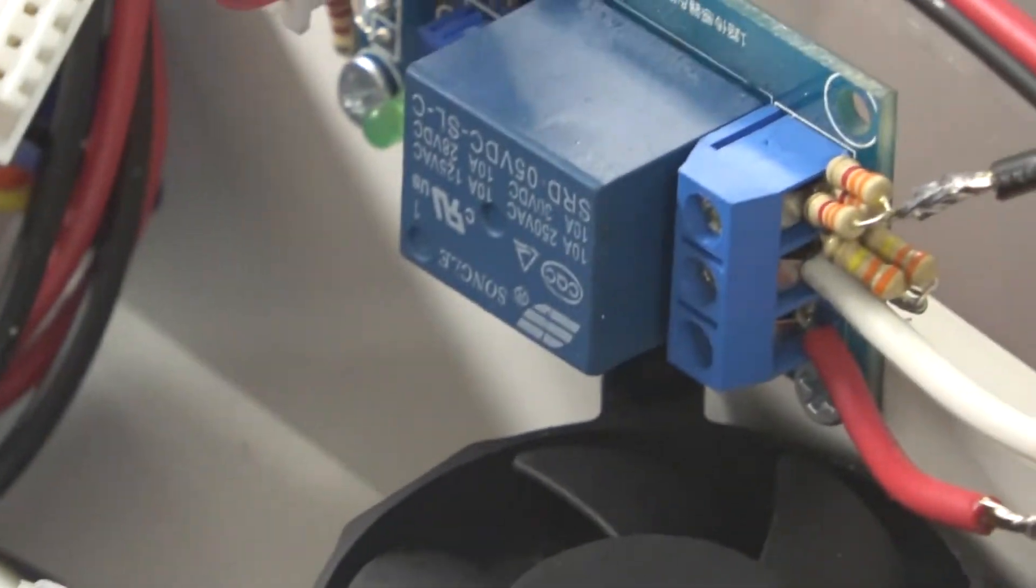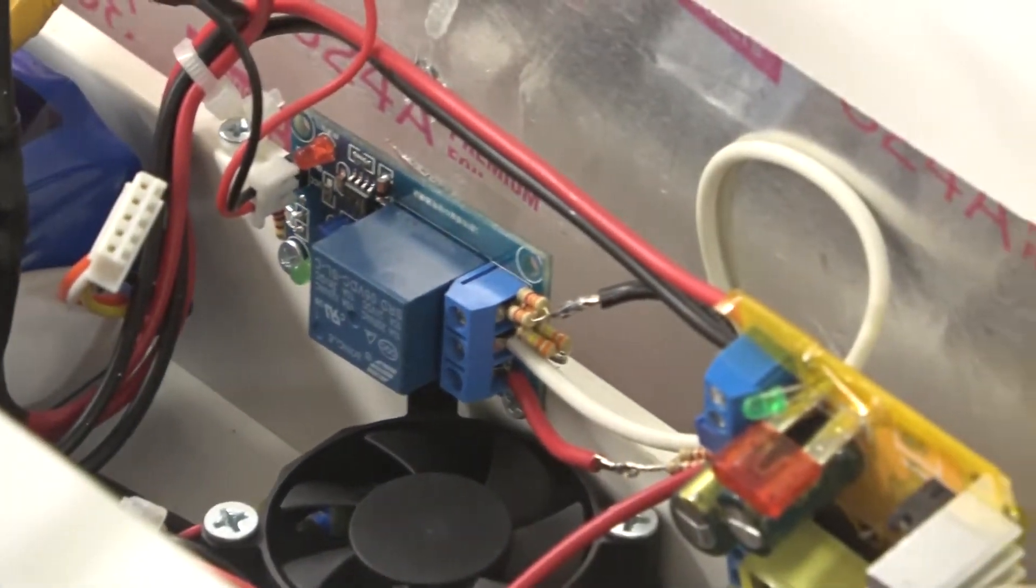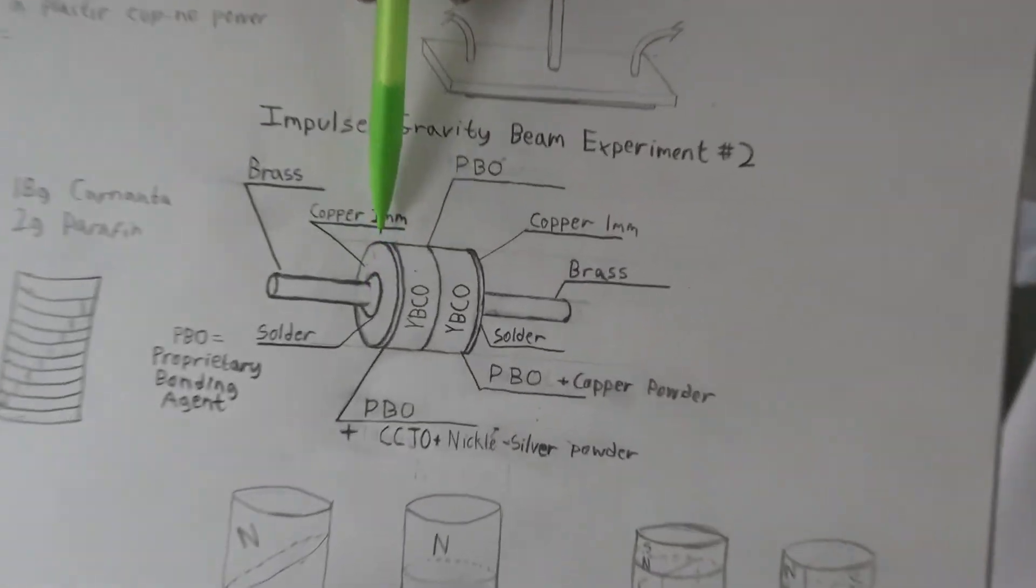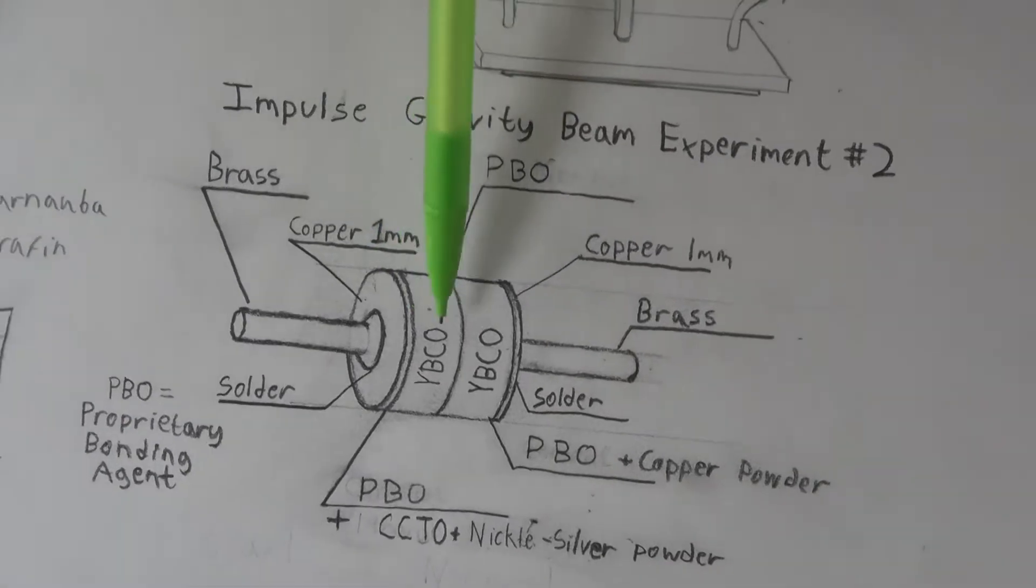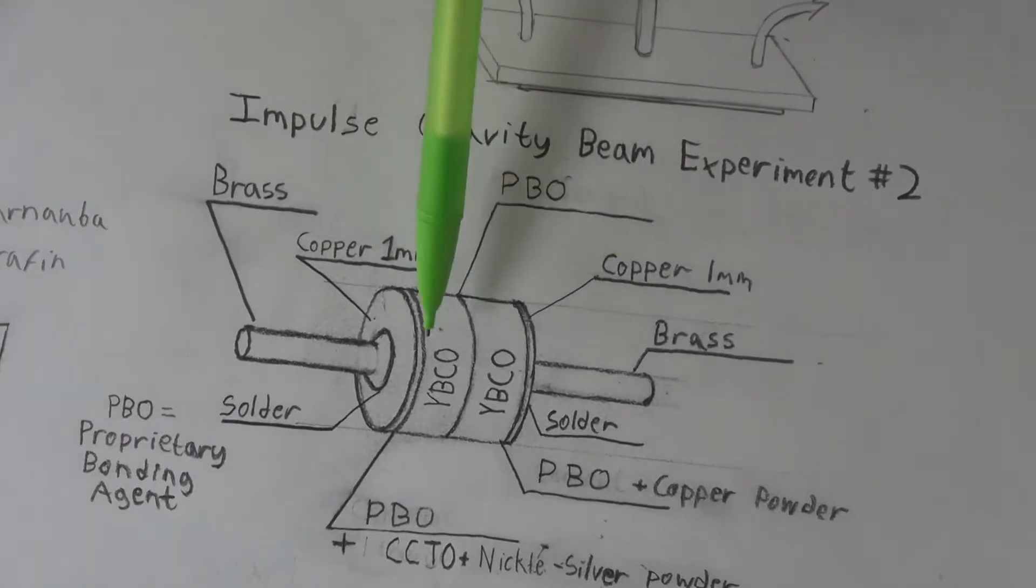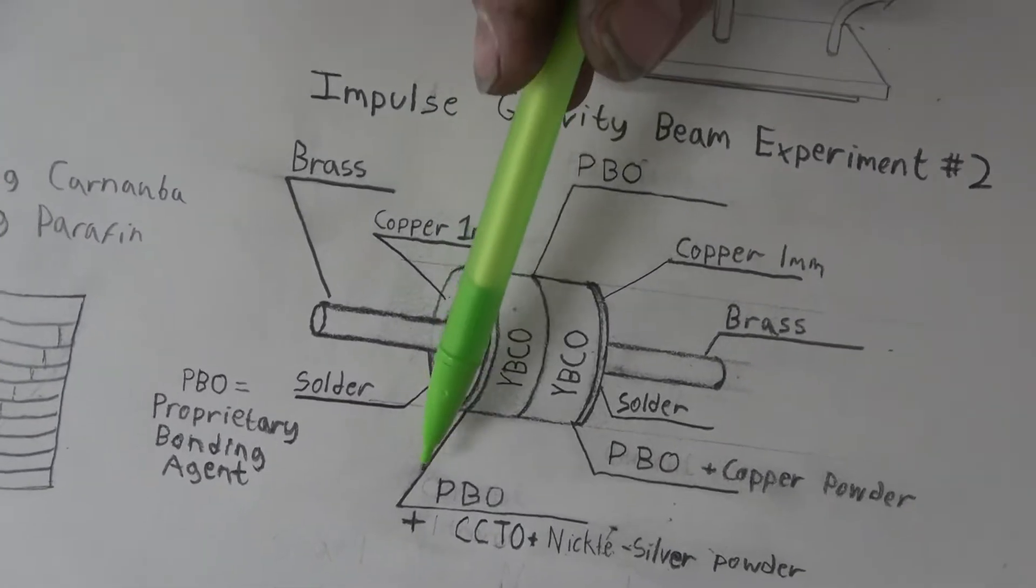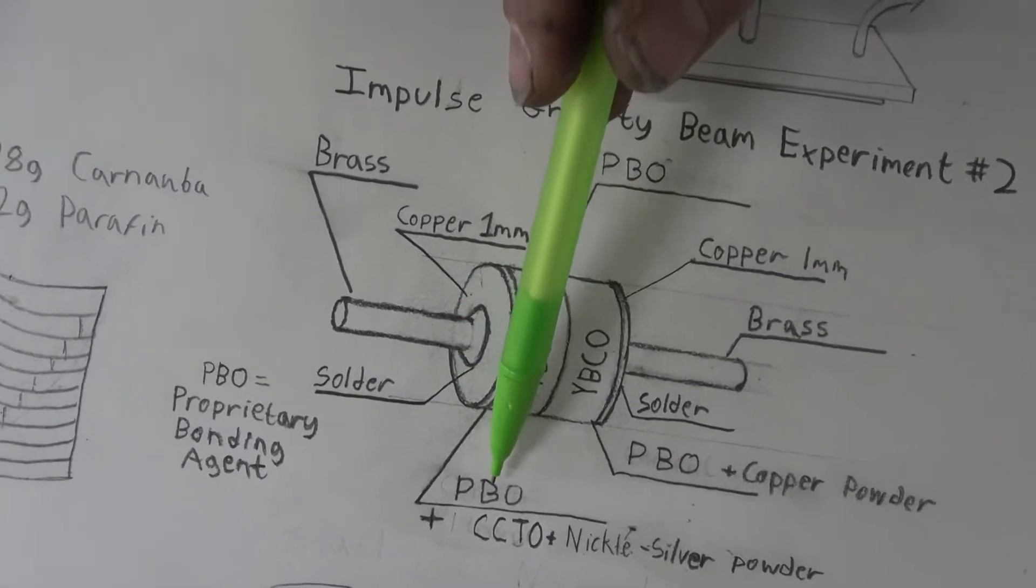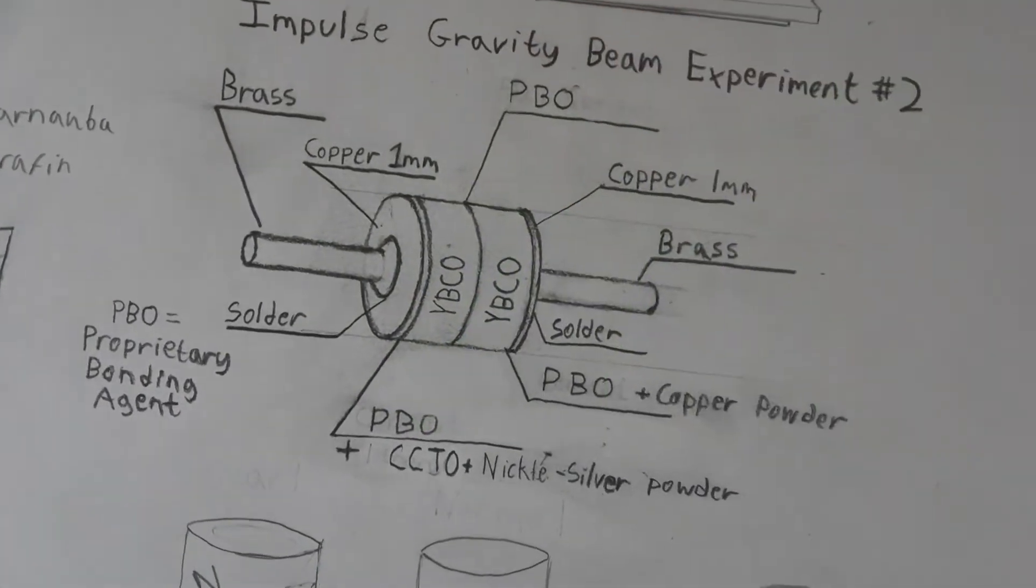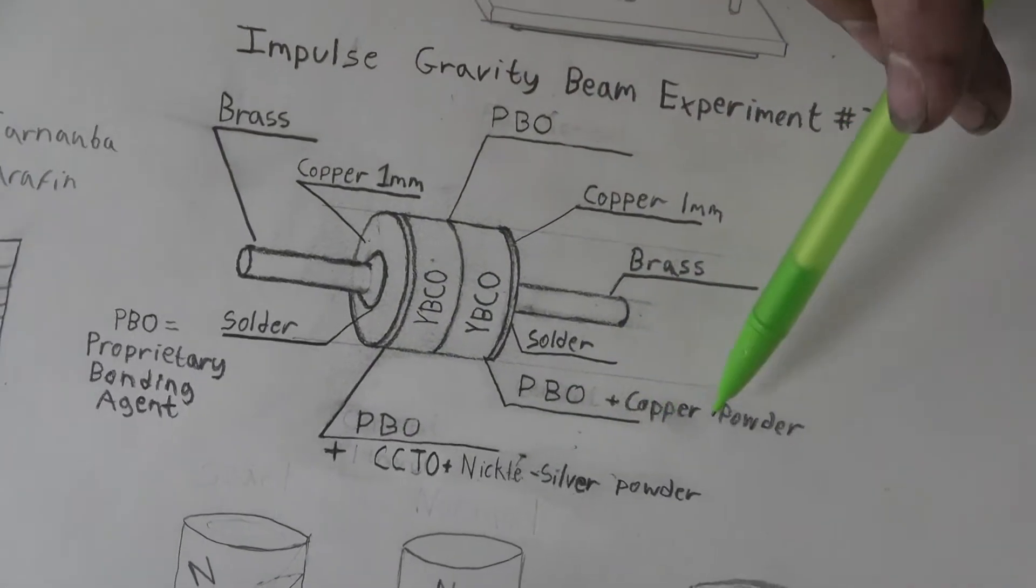Jarrett Meyer, do you want to show us what you worked on today, this thing right here? Yeah, inside there, we've got a brass bolt, taper head Phillips, slotted to a copper disc that's one millimeter thick, as wide as the YBCO discs, which are one-inch discs. And they are bonded at three points, so we have a proprietary bonding agent combined with CCTO, calcium, copper, titanium oxide, I think, and nickel-silver powder.